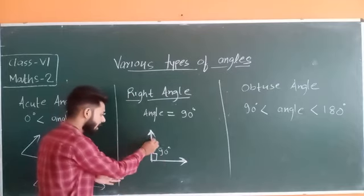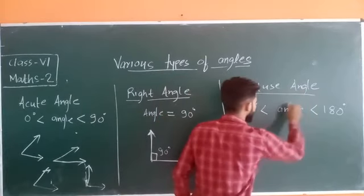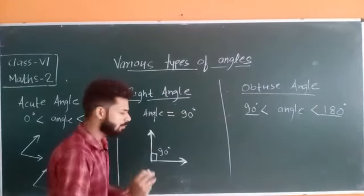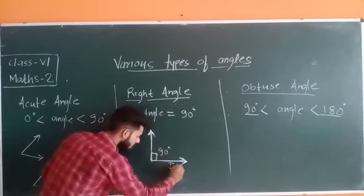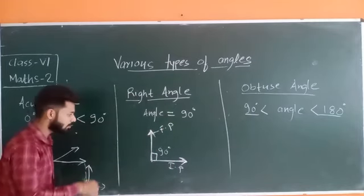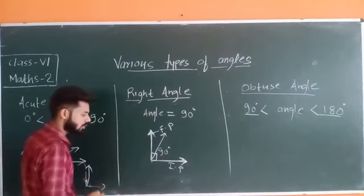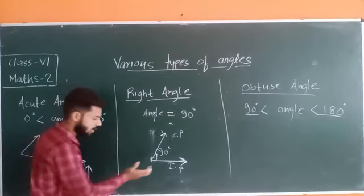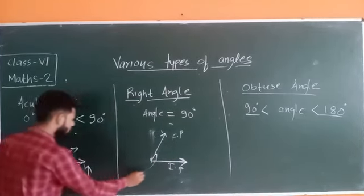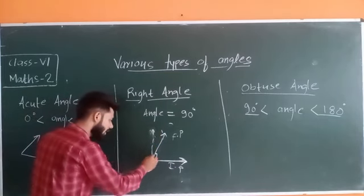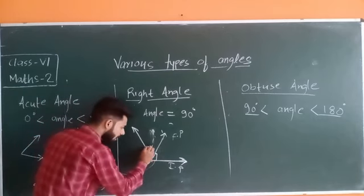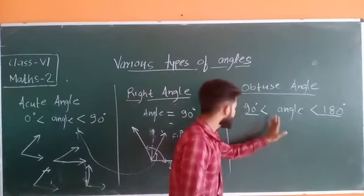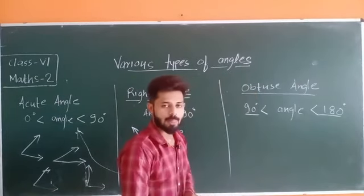If the angle measure is greater than 90 degrees, it becomes an obtuse angle. When the angle measure is greater than 90 degrees and less than 180 degrees, it is known as an obtuse angle. So angles between 90 degrees and 180 degrees are known as obtuse angles. These are the first three types of angles.